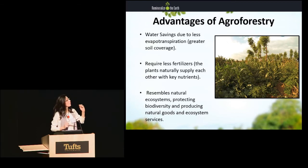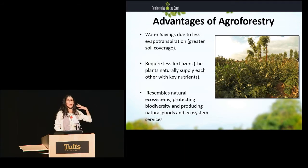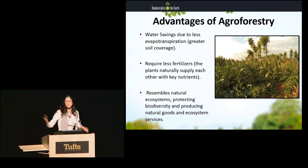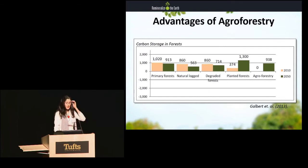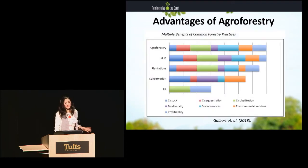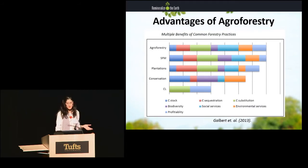What agroforestry does that is really cool is that some plants produce nutrients that are good for other plants, and it resembles natural ecosystems — so again, using nature as our model. This is a study from the World Bank, and they compared different types of forestry management. Agroforestry in planted forests are the models that trap the most amount of carbon. Agroforestry is also the best option among forestry options for biodiversity, social services, and environmental services.